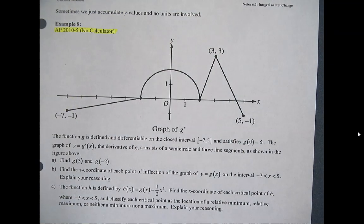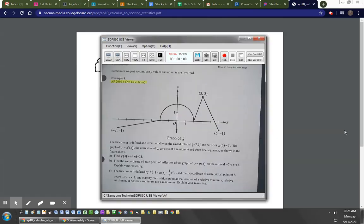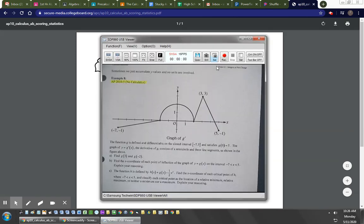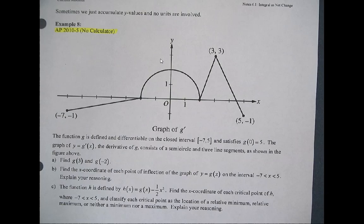Checking the 2010 AP scoring statistics, question number 5 had an average score of 1.75 points. Interesting — I feel like this one was easier than the ones before, but maybe that's just me.